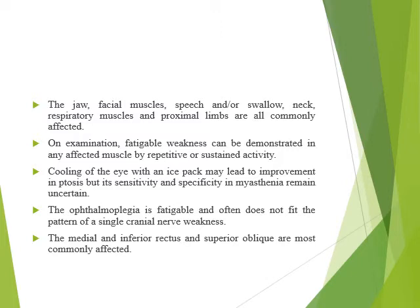The jaw, facial muscles, speech, and swallowing may all be affected. When you examine such cases, there is fatigable weakness. Tests include asking the patient to count up to 10 in one breath — most cannot finish. Another test is arm abduction for two minutes, or asking the patient to look upward for 30 seconds. The ice pack test — cooling of the eye — causes improvement of symptoms, though specificity and sensitivity are uncertain. The ophthalmoplegia is fatigable and does not fit the pattern of a single cranial nerve; medial and inferior rectus and superior oblique are most commonly affected.